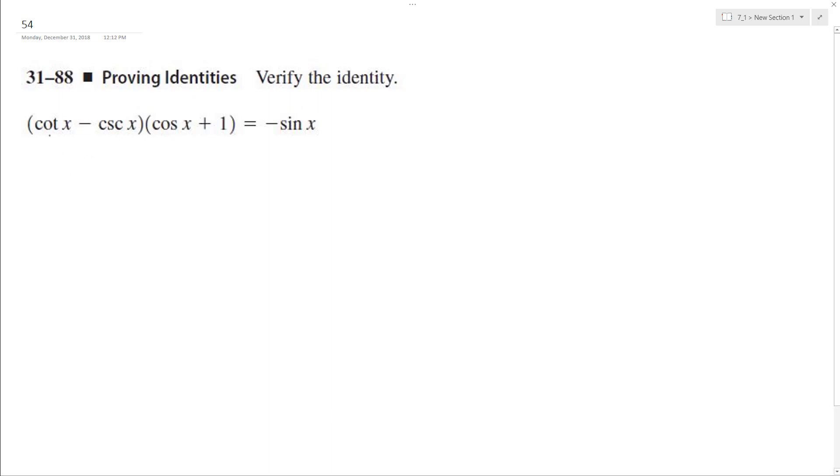So cotangent, think of cotangent as the same thing as cosine x over sine x. So I end up with cosine squared x over sine x plus cosine x over sine x.